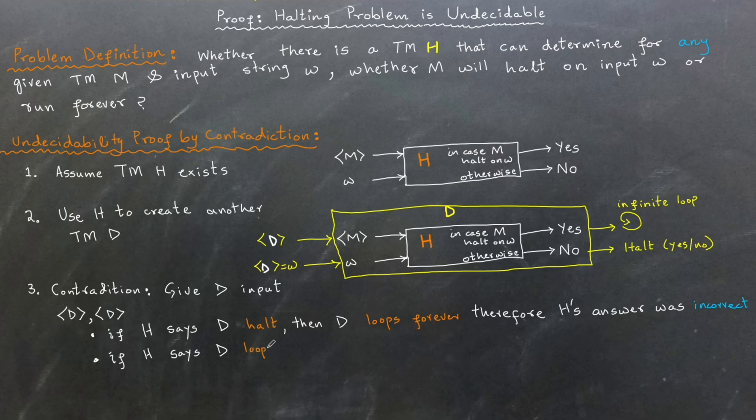Similarly, if H says D loops forever, then D halts, once again proving that H is not giving us the correct answer.